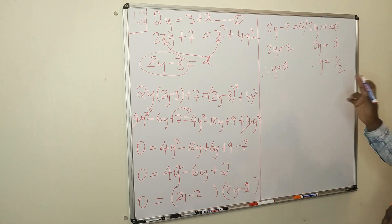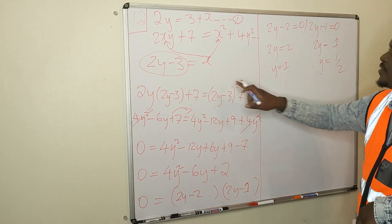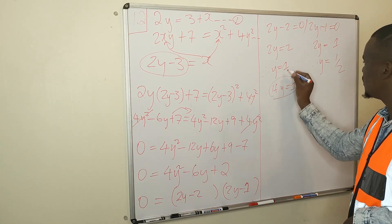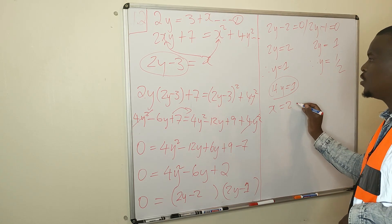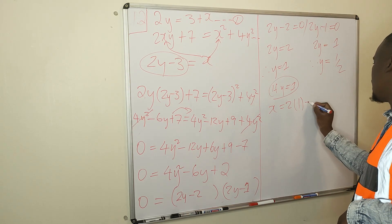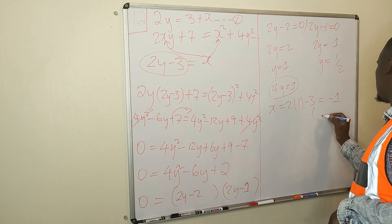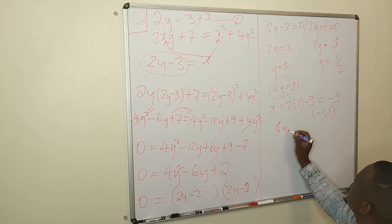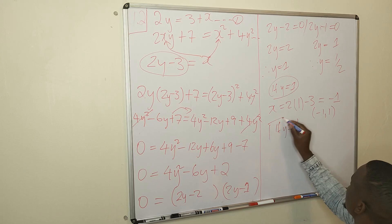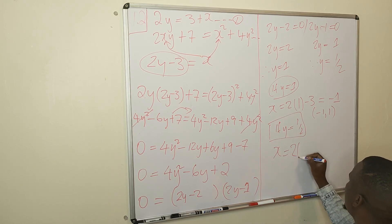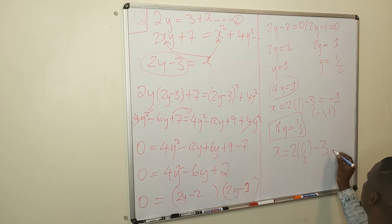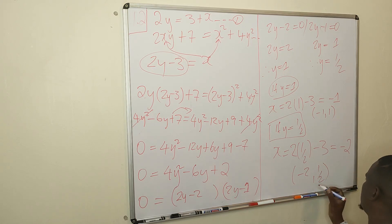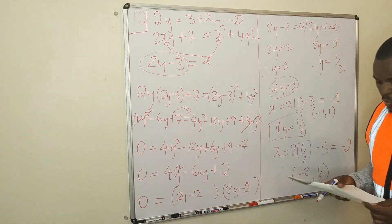Now that you have your y values, find your x values using x = 2y - 3. If y = 1, then x = 2(1) - 3 = -1. If y = ½, then x = 2(½) - 3 = -2. So the solutions are (x, y) = (-1, 1) and (-2, ½). We're done with 1.2.